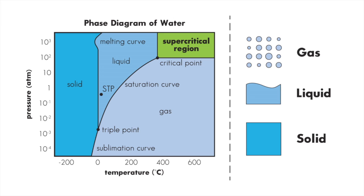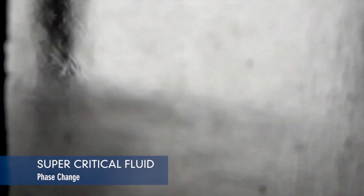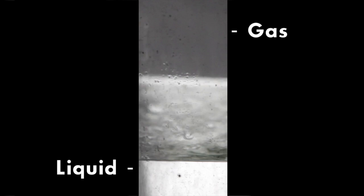In a supercritical state, water becomes something like a liquid and something like a gas. At that point, you can no longer compress the water back into a liquid phase. You now have what's something like a liquid, something like a gas.